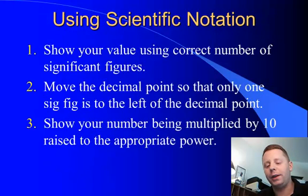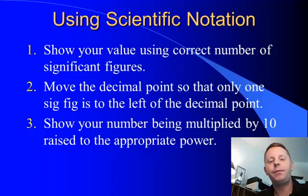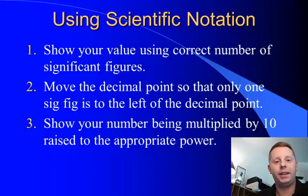So the rules for doing this are fairly straightforward. First, show your value using the correct number of significant figures. Then, rewrite your number with one significant figure to the left of the decimal place. Then multiply what you have written times 10 raised to whatever power gets you back to your original value. It sounds a lot more complicated than it is, so let's take a look at a few examples to try and fill in some of the details.